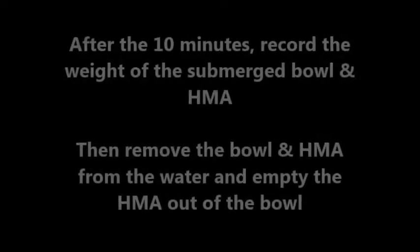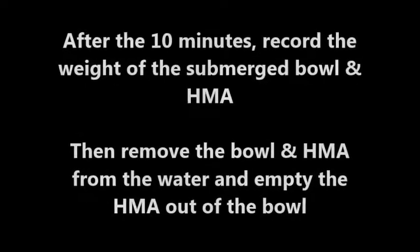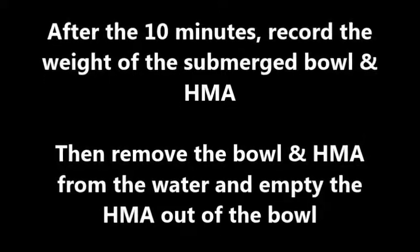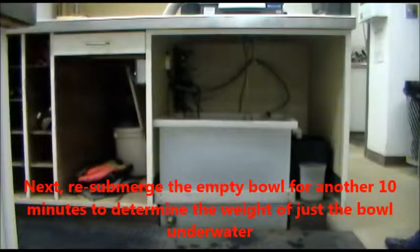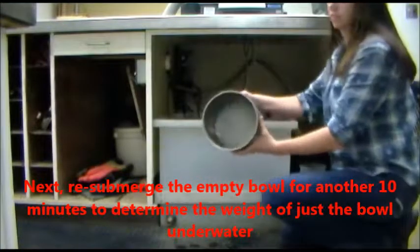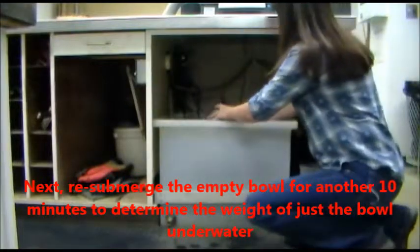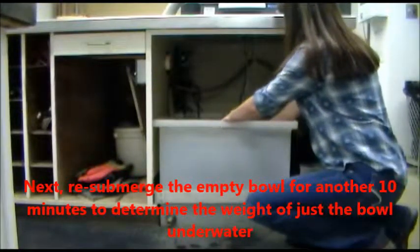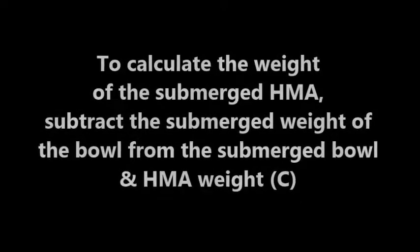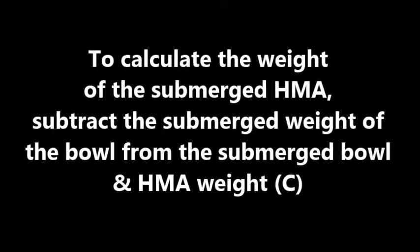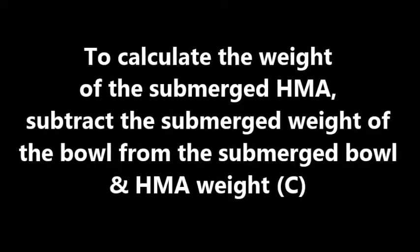After the 10 minutes, record the weight of the submerged bowl and HMA. Then remove the bowl and HMA from the water and empty the HMA out of the bowl. Next, resubmerge the empty bowl for another 10 minutes to determine the weight of just the bowl under water. To calculate the weight of the submerged hot mix asphalt, subtract the submerged weight of the bowl from the submerged bowl and hot mix asphalt weight. This is C in the equation.